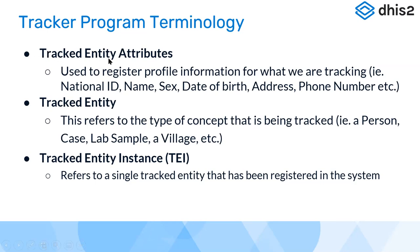Tracked entity attributes are the properties of what we are tracking. For example, if we have a tracked entity called 'person,' the inherent properties of that person could include a unique national identity, gender, name, date of birth, and phone number. These tend to be permanent or semi-permanent - things that don't usually change and are part of that person. These are what we mean by tracked entity attributes.